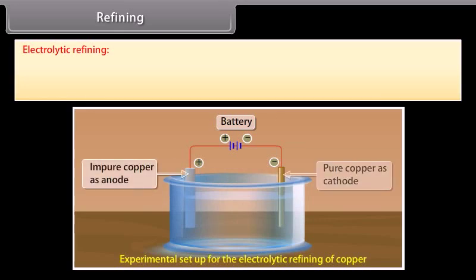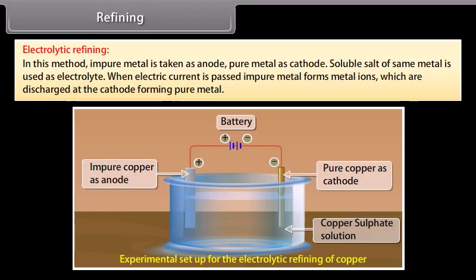Electrolytic refining: In this method, impure metal is taken as anode, pure metal as cathode. Soluble salt of same metal is used as electrolyte. When electric current is passed, impure metal forms metal ions which are discharged at the cathode forming pure metal. For example, copper, zinc, and aluminum.